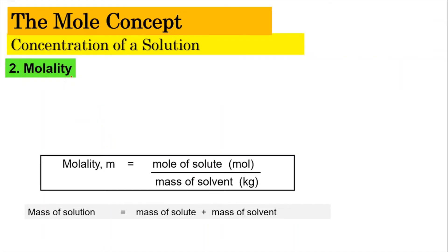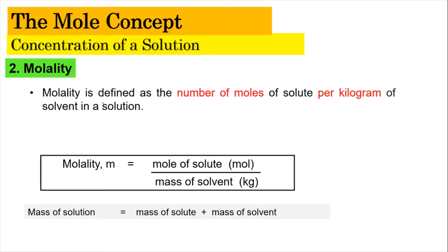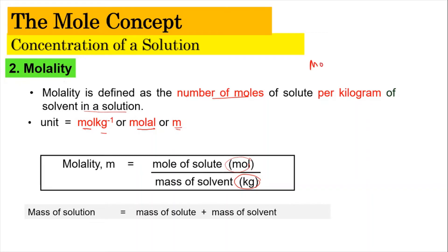Now we're going to focus on the next representation of concentration, which is molality. Molality is defined as the number of moles of solute per kilogram of solvent in the solution. The formula is: moles of solute divided by the mass of the solvent in kilograms. That is why the unit of molality is mol per kilogram, also written as molal or a lowercase m. Unlike molarity, which uses volume of solution, molality uses the mass of the solvent in kilograms.